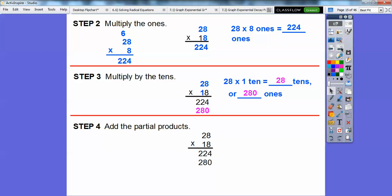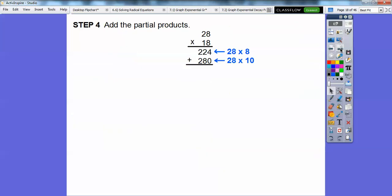So we got that part done now. Now we're going to add the partial products. And what are those partial products? These are the partial products. We got this number from multiplying the 28 times the 8 ones, and we got this number from multiplying the 28 times the 1 tens right there. So now we're going to add these partial products.